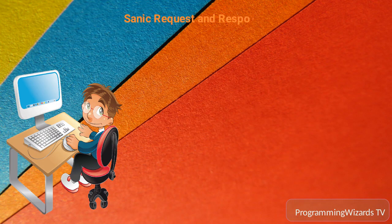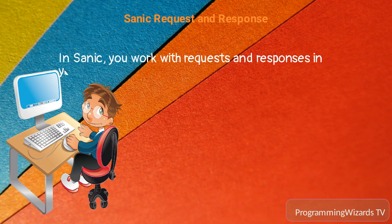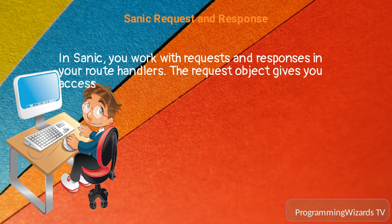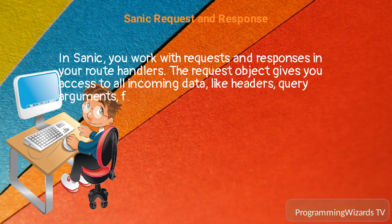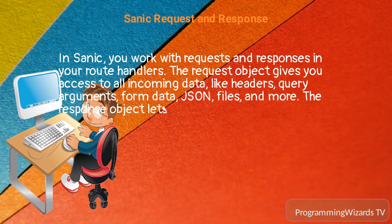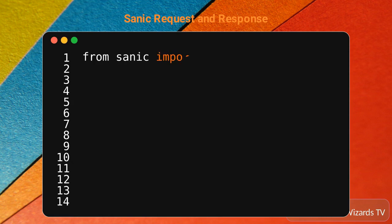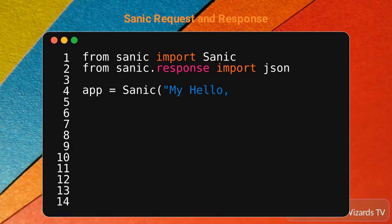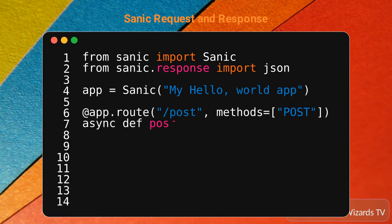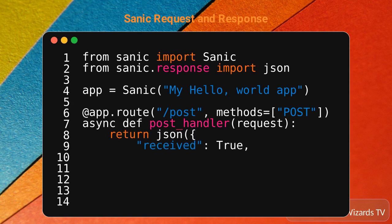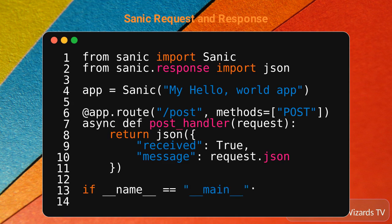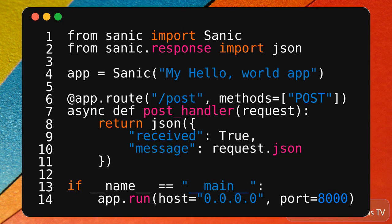Sanic request and response. In Sanic, you work with requests and responses in your route handlers. The request object gives you access to all incoming data, like headers, query arguments, form data, JSON, files, and more. The response object lets you define what data you want to send back and how. In this example, we define a /post endpoint, access the JSON body of the request using request.json, and return a response indicating that we received the request.